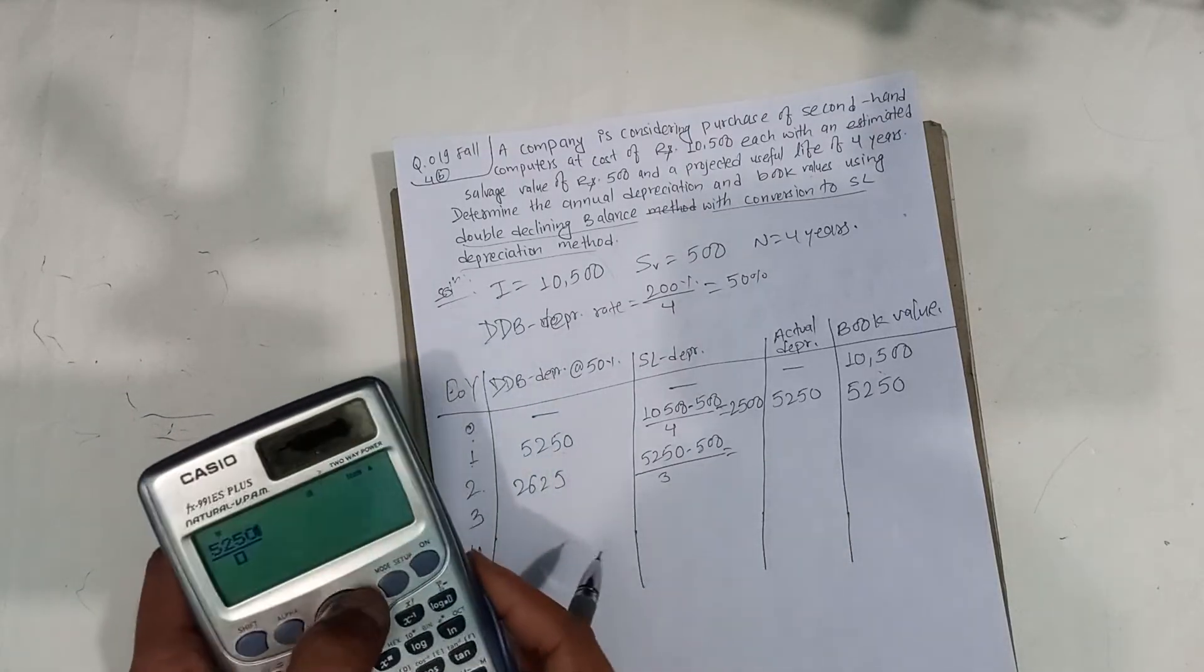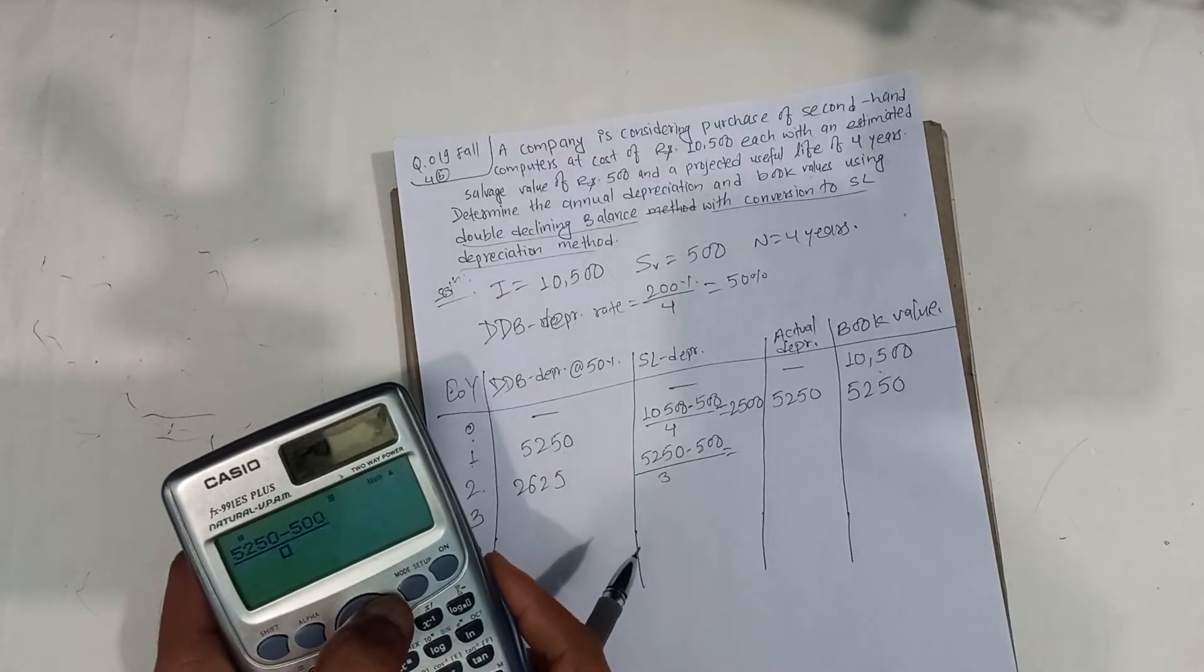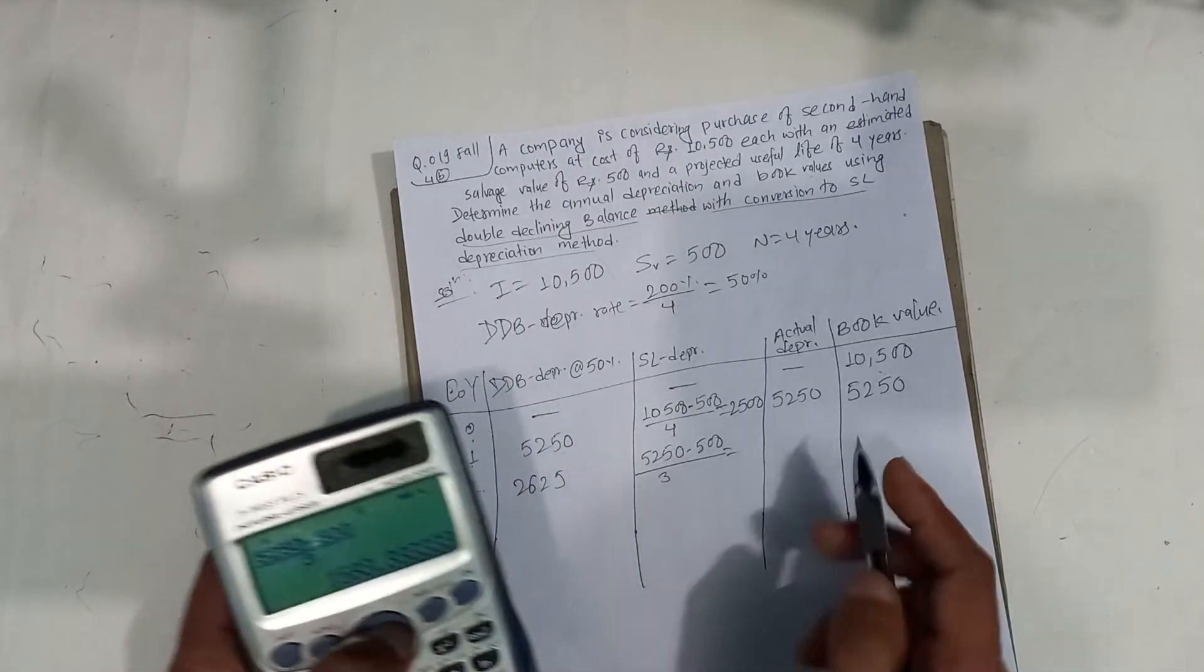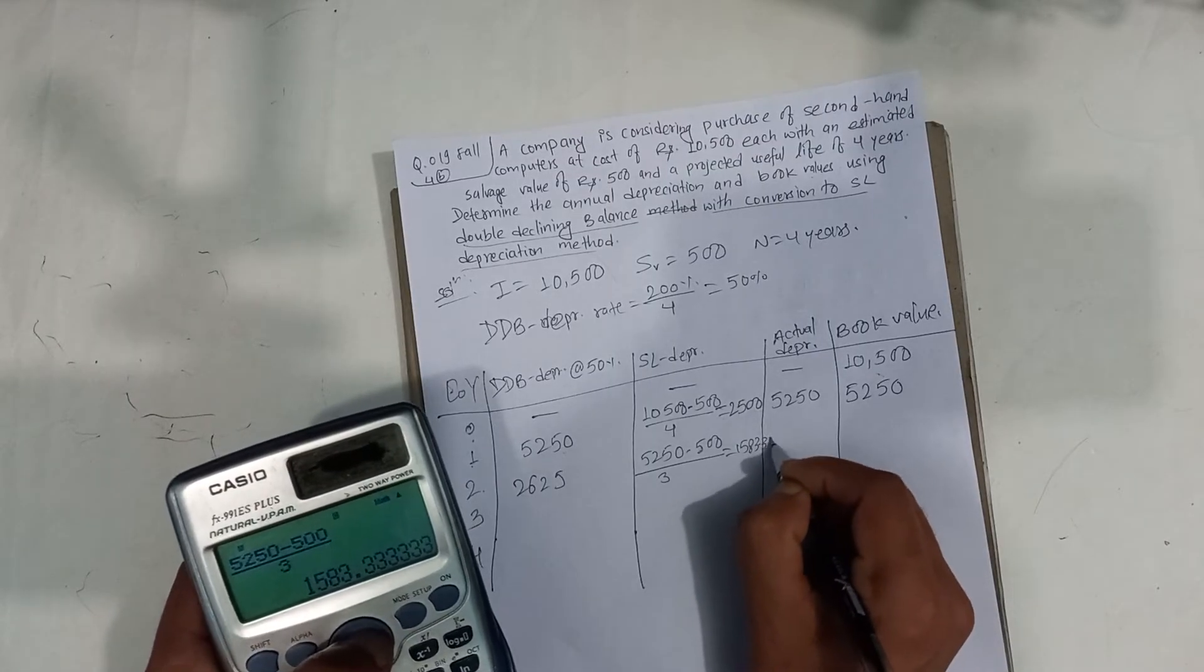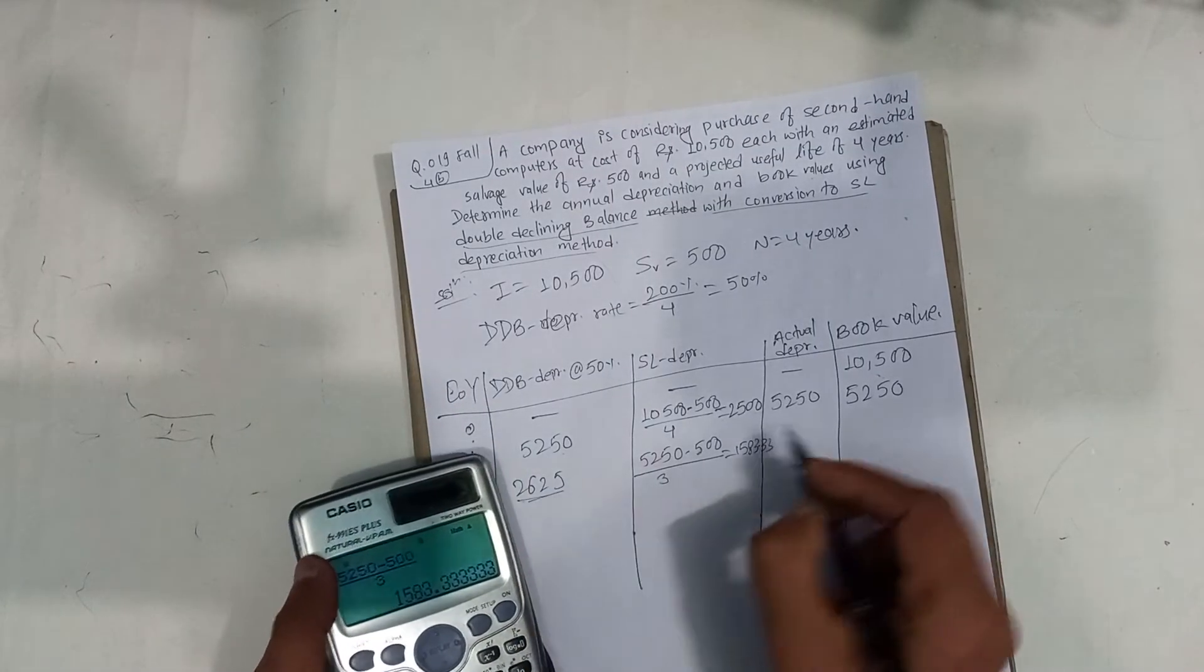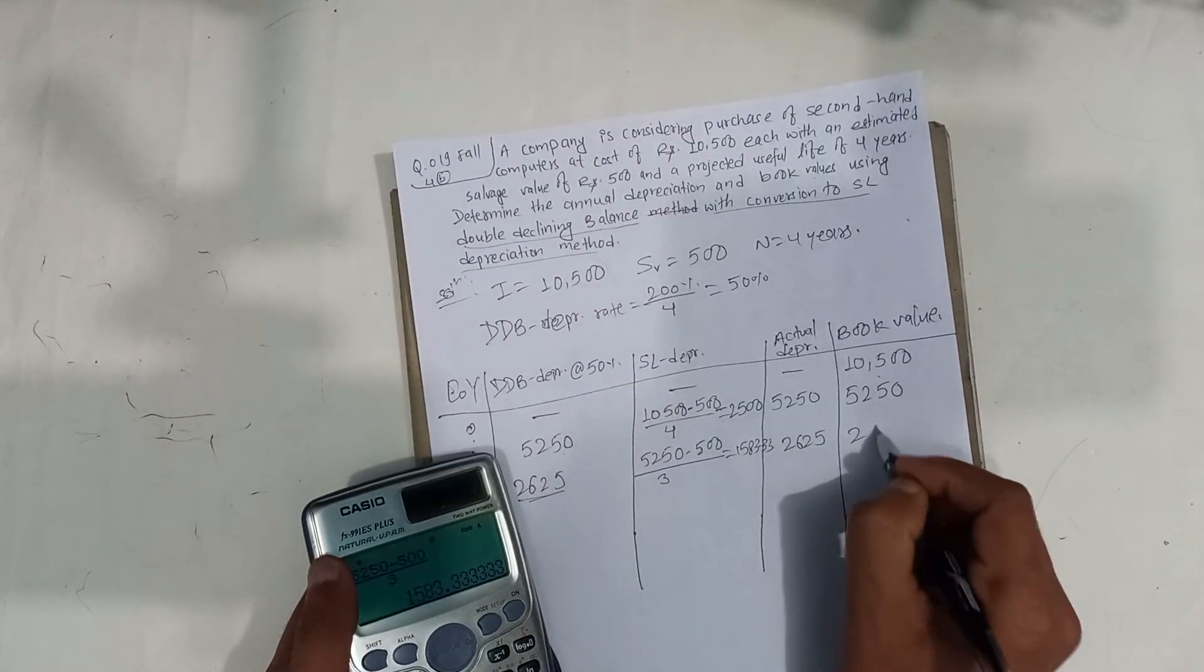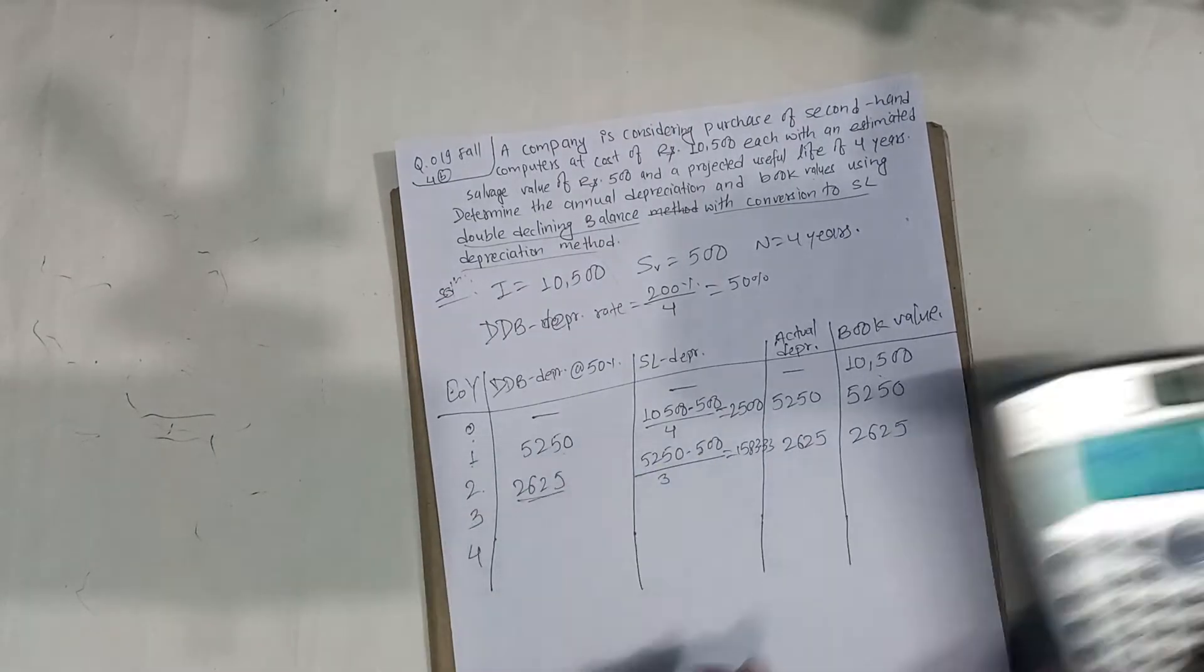That equals 1,583.33. Again this value is higher, so we use 2,625. We use 50%.